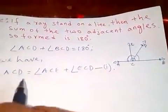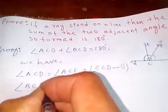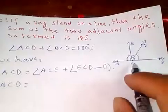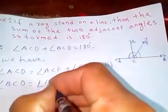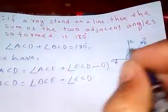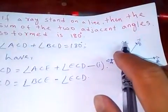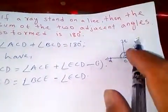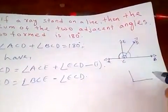And now BCD, since we are going to find BCD and ACD, angle BCD is equal to, let's take angle BCE minus angle ECD. Am I right? BCD is same as BCE minus ECD of this.